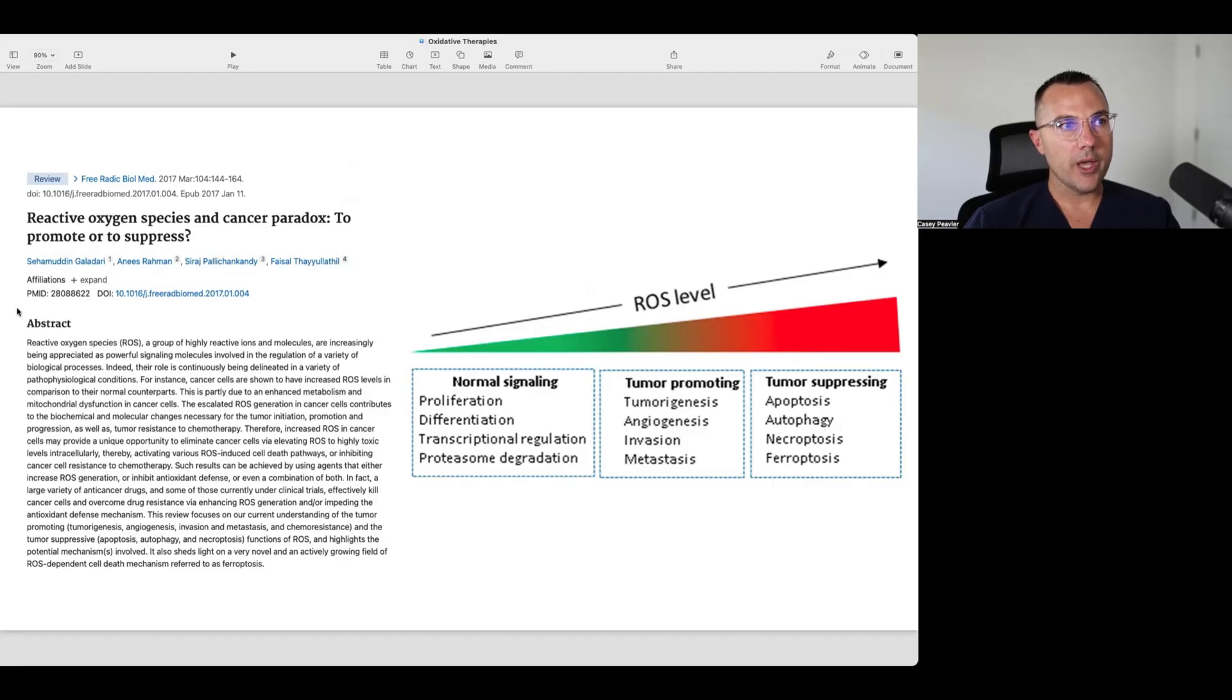The escalated ROS generation in cancer cells contributes to their biochemical and molecular changes necessary for tumor initiation, promotion, and progression, as well as tumor resistance to chemotherapy. Therefore, increased ROS in cancer cells may provide a unique opportunity to eliminate cancer cells via elevating ROS to highly toxic levels intracellularly, therefore activating various ROS-induced cell death pathways or inhibiting cancer cell resistance to chemotherapy.